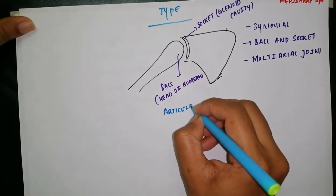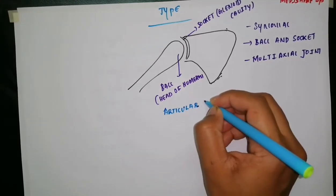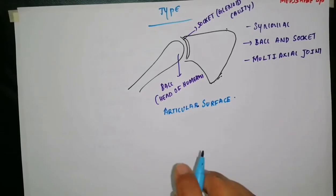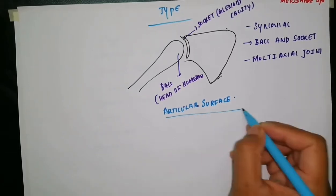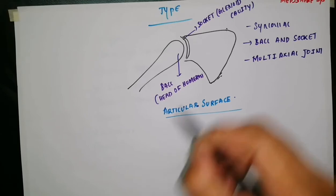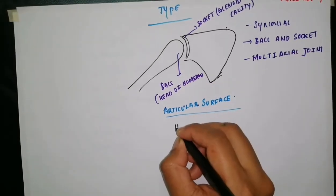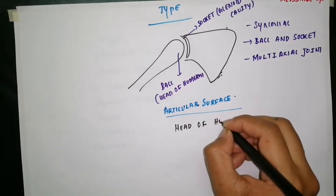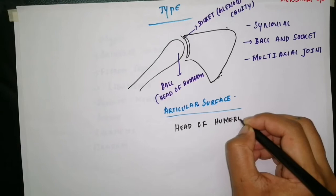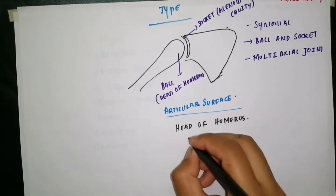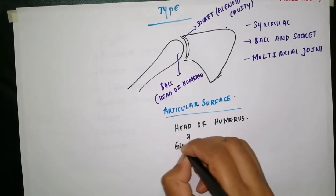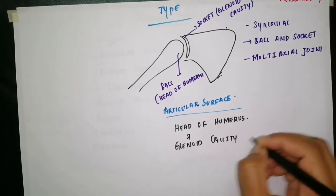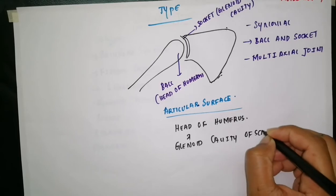The articular surfaces: the shoulder joint is formed by the head of humerus and the glenoid cavity of the scapula. These are the articulating surfaces.